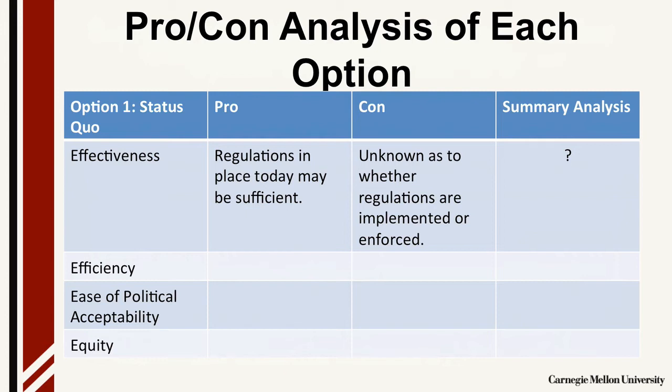A common mistake is to focus only on effectiveness or only look at the reasons why a policy is a good idea — the pros. But it's also very important to examine the cons, why a policy might not work relative to a given criteria. Otherwise, you're not an analyst but an advocate. And even if you are working for an advocacy organization, you need to understand the critiques of those opposing your policy in order to either respond to them or negotiate a compromise. By filling in this table, you can produce your summary analysis.